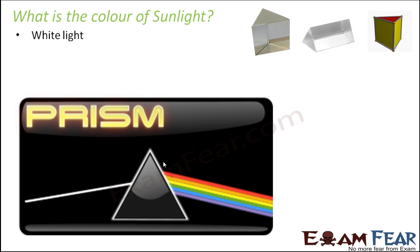How do we get to know that sunlight is made up of seven different colors? Do you know what a prism is? A prism is nothing but a structure made up of three rectangular glass pieces. It is entirely solid — not hollow from inside.